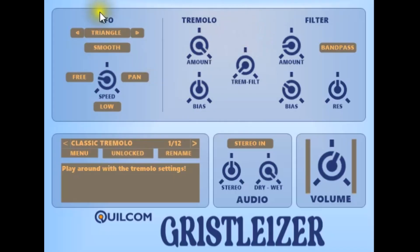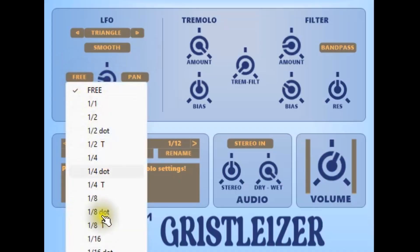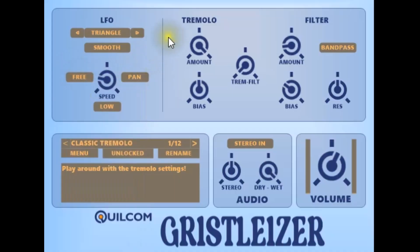The LFO uses the same waveform set as the original, but for the sharper edge waveforms like Square, you can bring in smoothing to reduce the clicks, although the original one clicked wildly. Then you've got the speed control and synchronisation, which of course the original one didn't have.